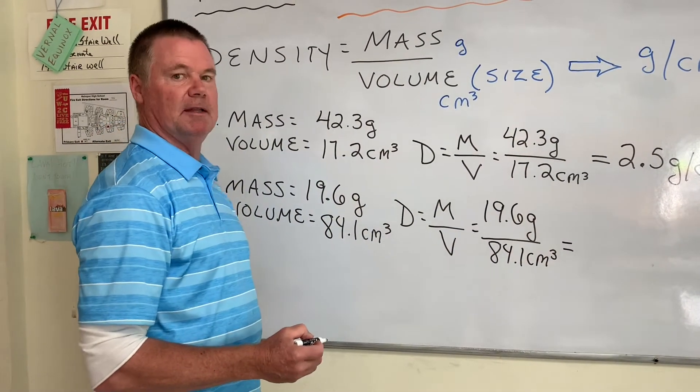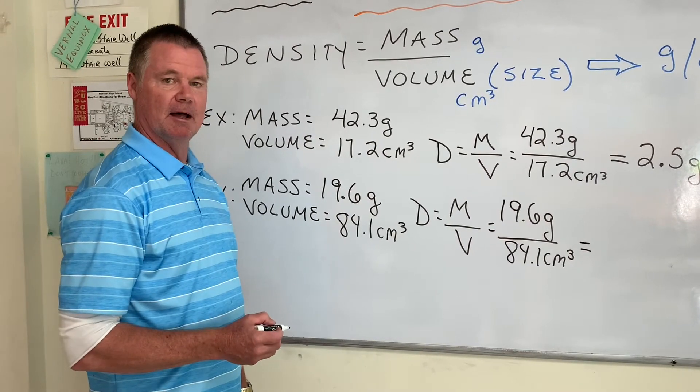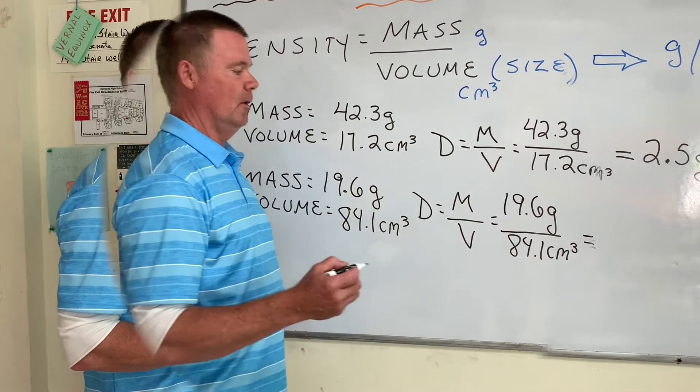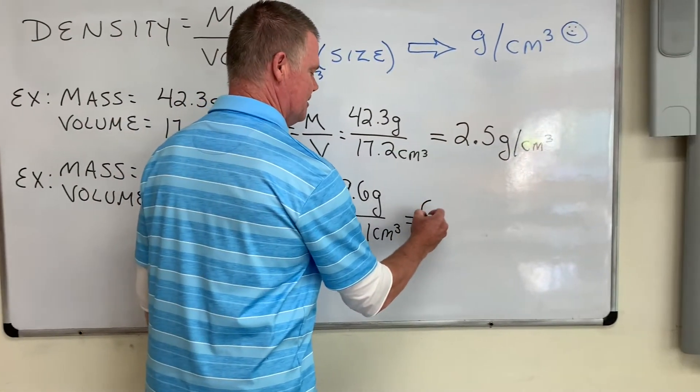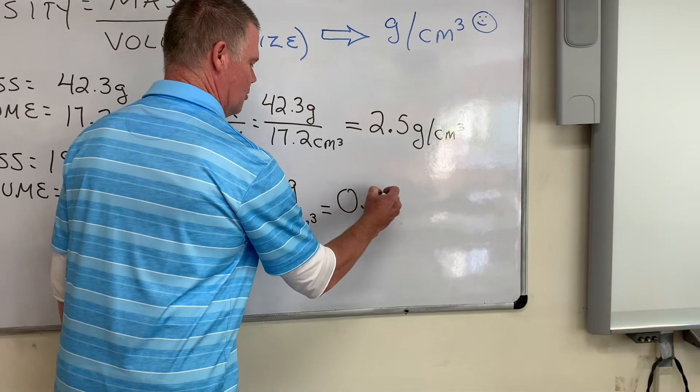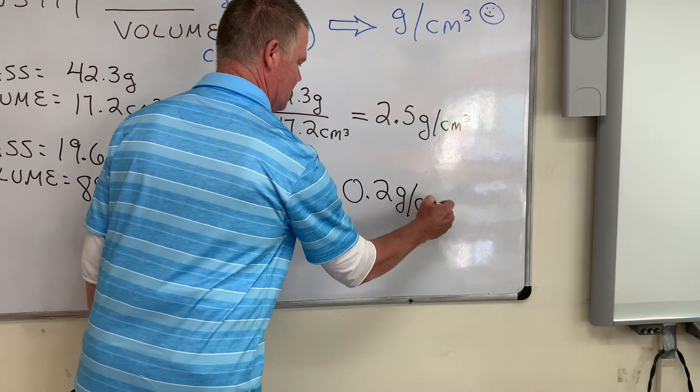We will always begin with the formula just to make sure we're doing it correctly and substitute in our numbers. Once again, stop the video, do your calculation, and turn the video back on once you have an answer. In fact, we are rounding off to the nearest tenth of a gram. We could get 0.2 grams per cubic centimeter.